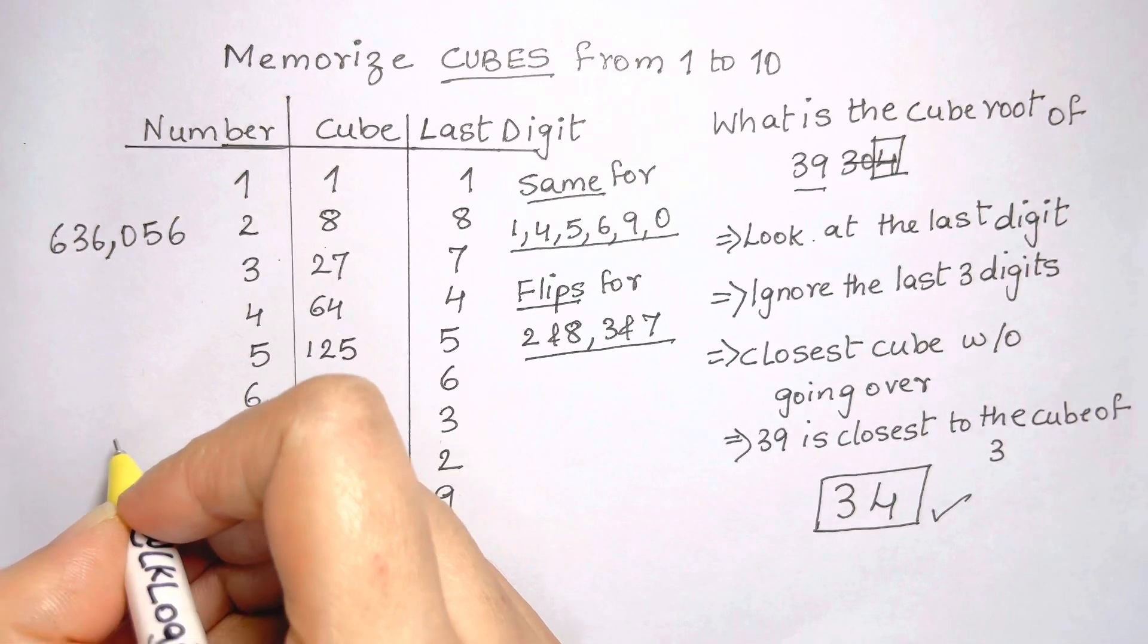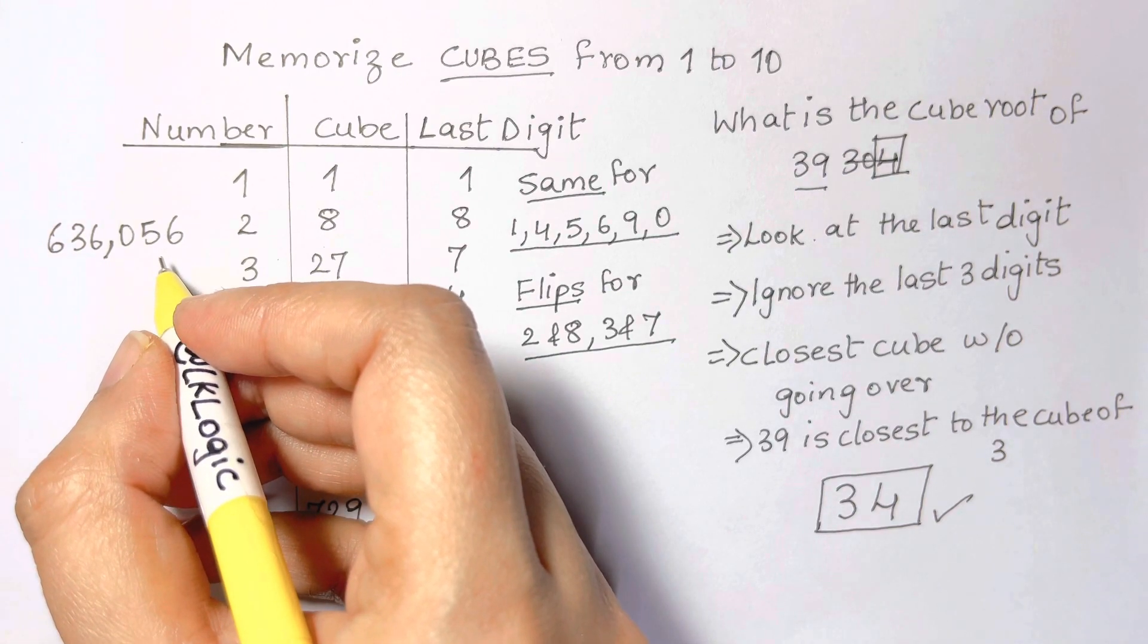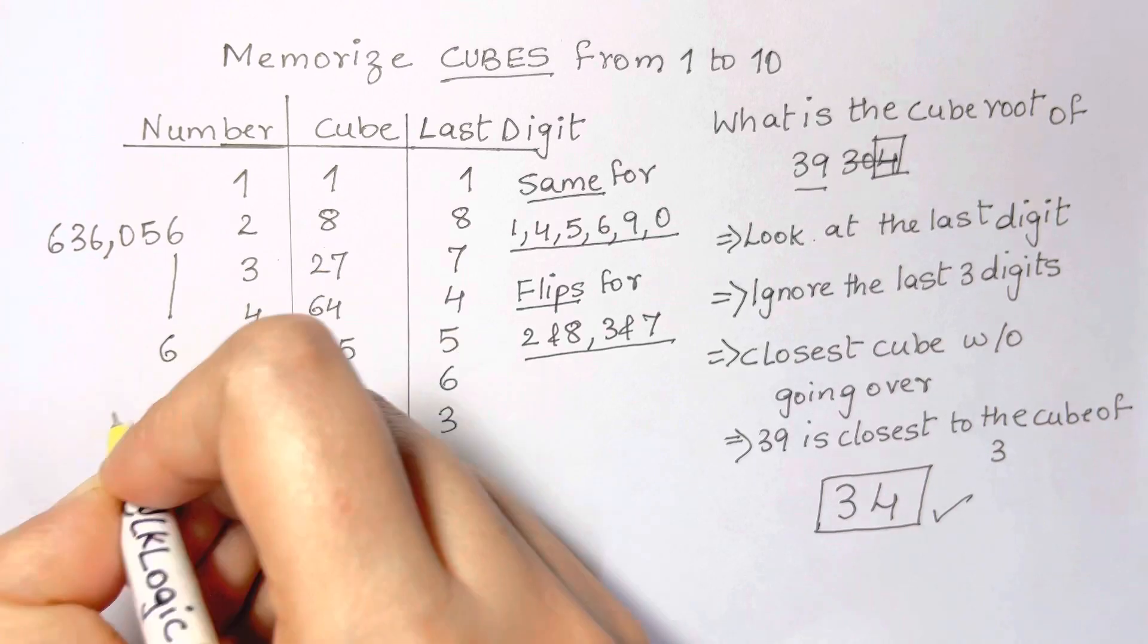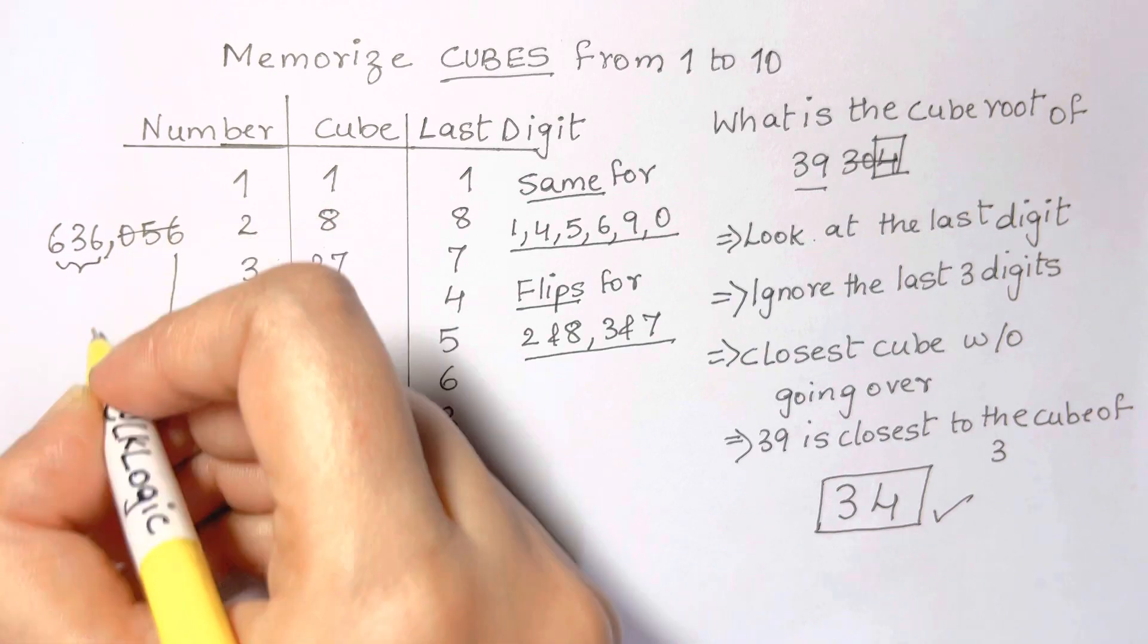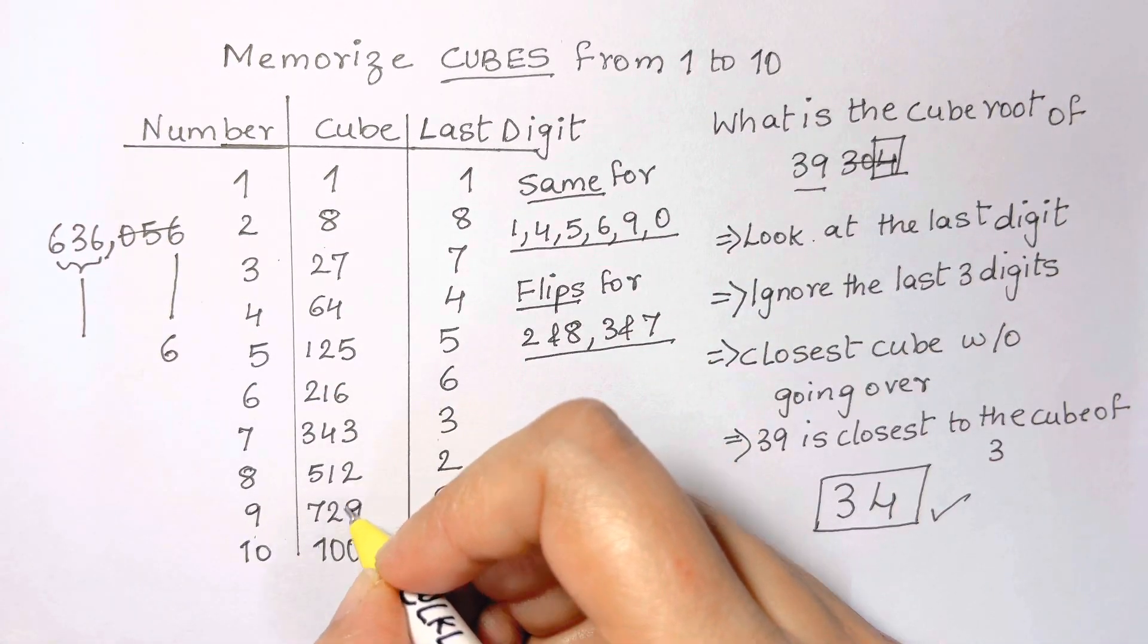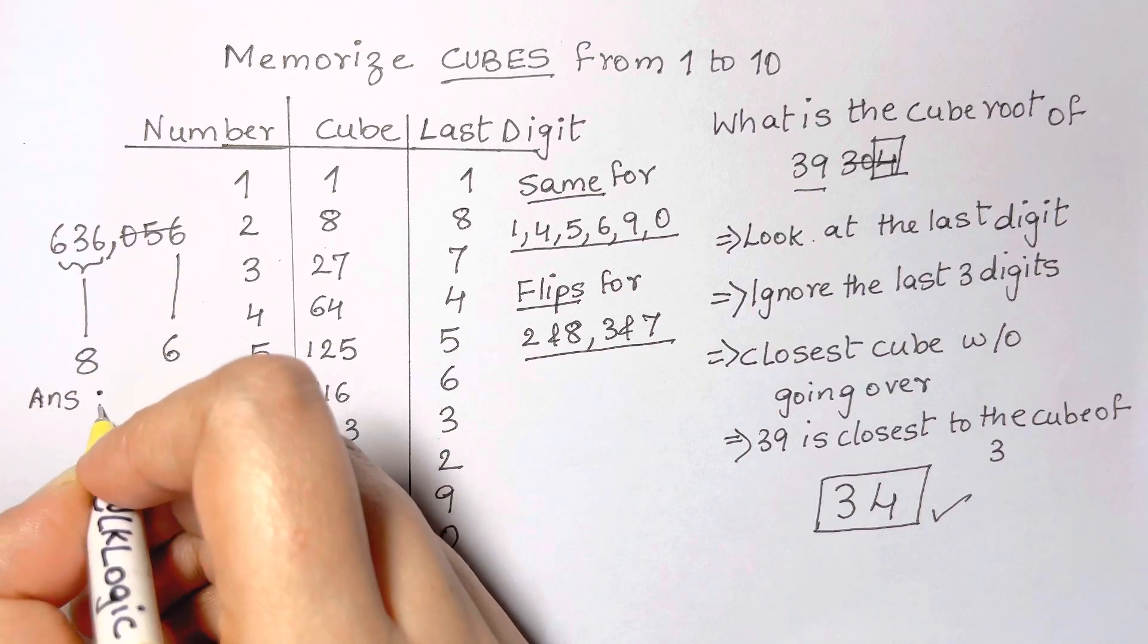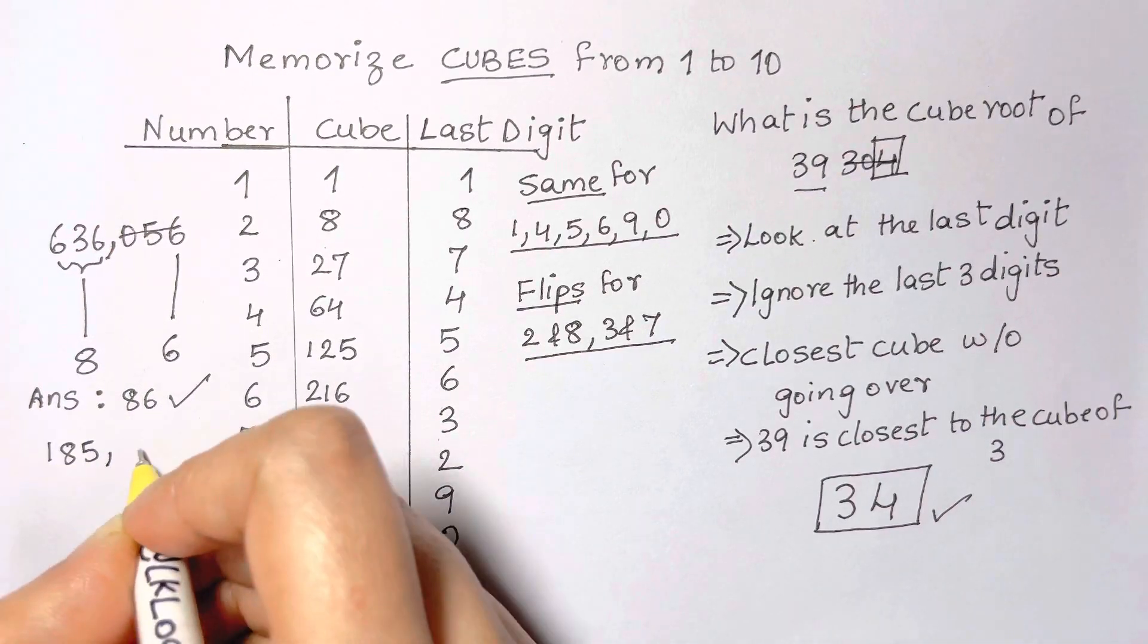So let's imagine if they tell you that the number is 636,056. We look at the last digit which is 6, and when the last digit is 6 that corresponds to the number 6. So we ignore the last three digits and we look at 636—that's between the cubes of 8 and 9, so we put 8. And therefore the cube root is 86. So once you memorize this table, you'll be able to do it very quickly.